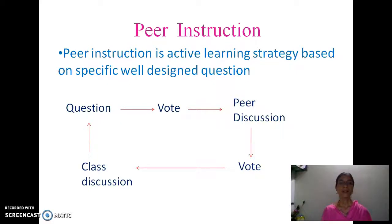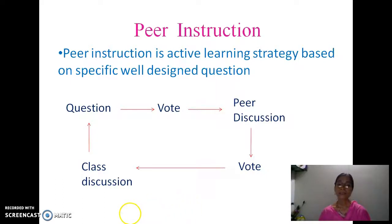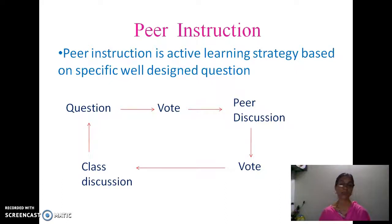The teacher poses one question with four answer options, and voting is taken. First, students give individual responses, and then they turn to their partner. They discuss in pairs, and after discussion, voting is taken again to see the difference in responses.